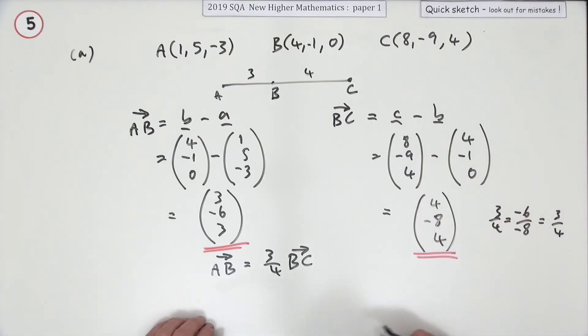And then you just have to make all the statements. If AB is a multiple of BC, that means that AB is parallel to BC.